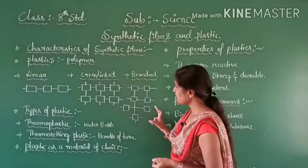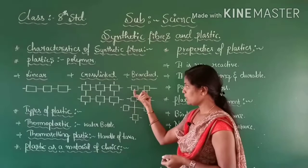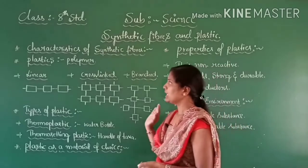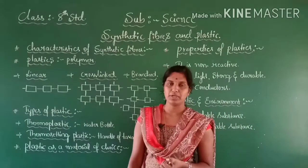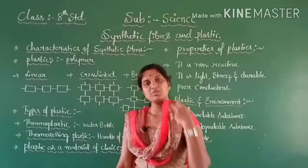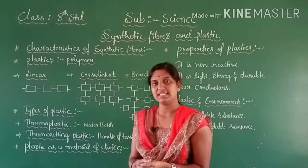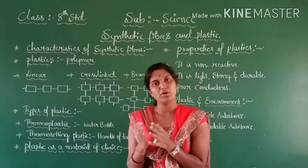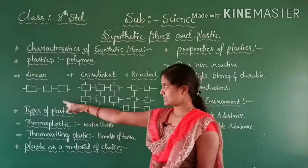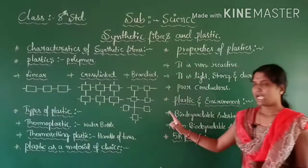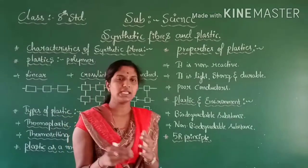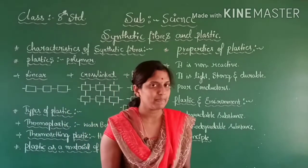So plastic is a polymer where the arrangement of monomers is different — that is linear arrangement, cross-linked arrangement, and branched arrangement. These are the three different ways the monomer units are arranged in the polymer of a plastic.